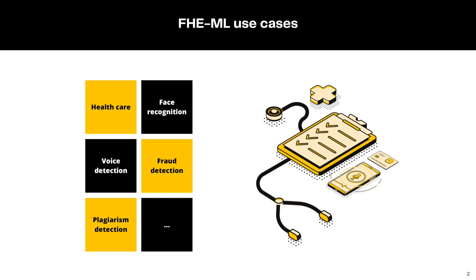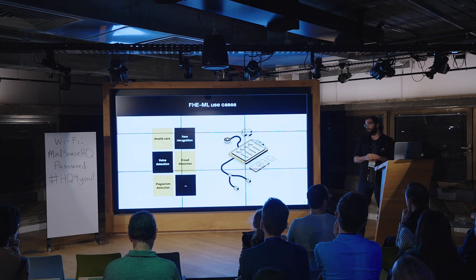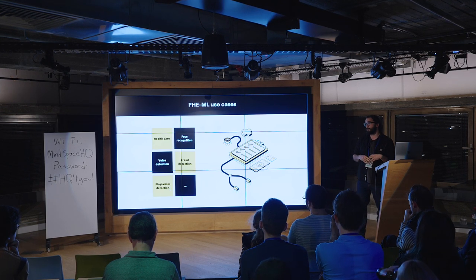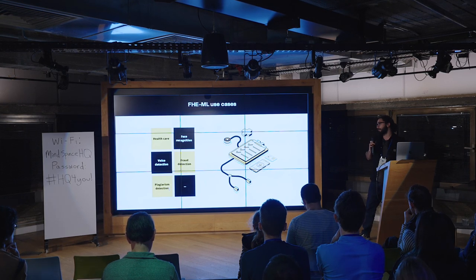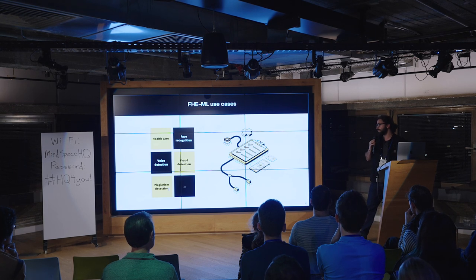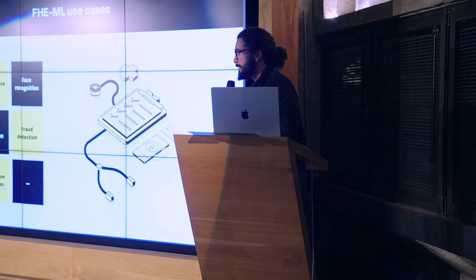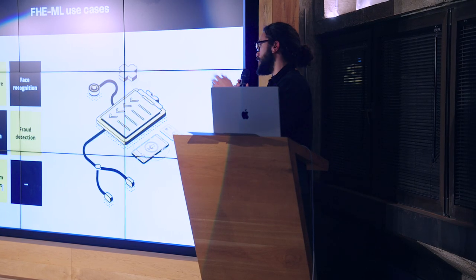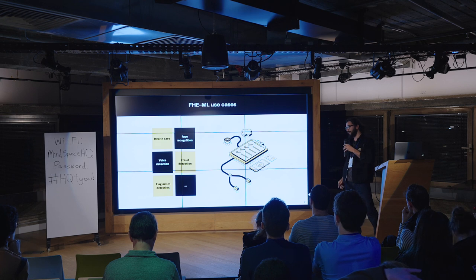Why would we want privacy-preserving machine learning? A lot of applications now run with AI — there are applications in healthcare like cancer detection, face recognition, and more recently search engines and large language models like Google and ChatGPT. One critical thing about all those applications is that the enterprises running those models actually collect the data of the users.